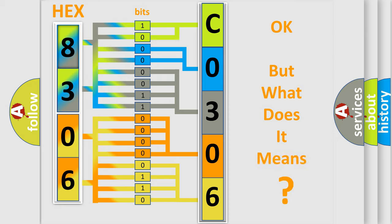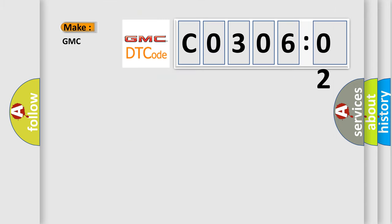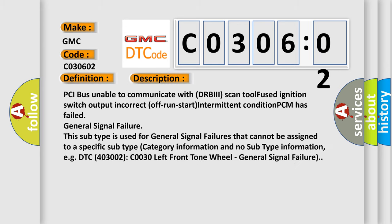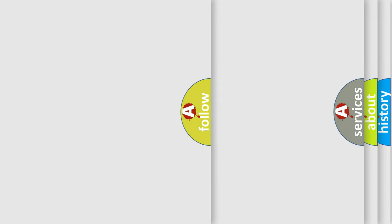The number itself does not make sense to us if we cannot assign information about what it actually expresses. So, what does the diagnostic trouble code C030602 mean? The basic definition is: No TCM bus message. This subtype is used for general signal failures that cannot be assigned to a specific subtype category — no subtype information. For example, DTC C0030 refers to the left front tone wheel general signal failure.